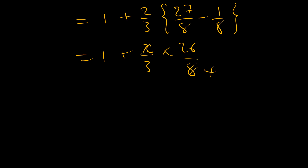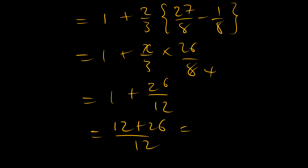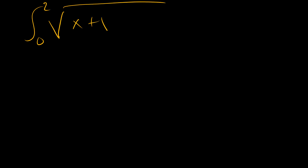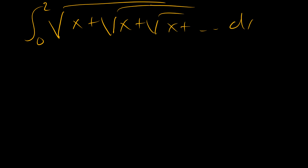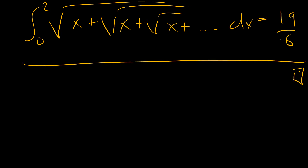This simplifies to two thirds times 26 over 8, which is 52 over 24, or 13 over 6. Adding to 1, we get 1 plus 13 over 6, which equals 19 over 6. So the integral from 0 to 2 of the big nested square root of x plus square root of x plus equals 19 over 6, and that is the answer.